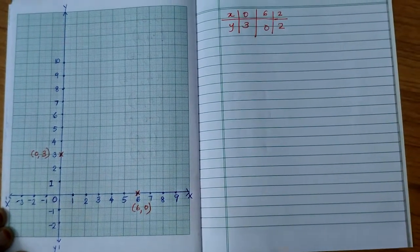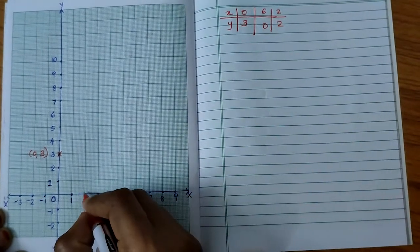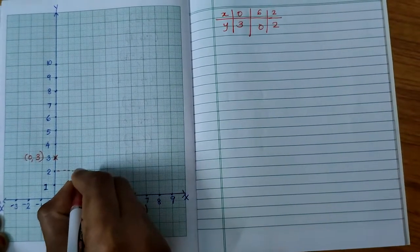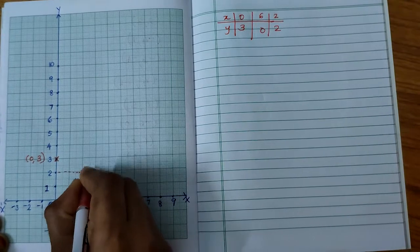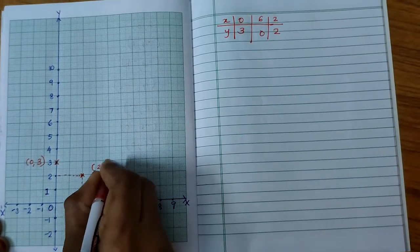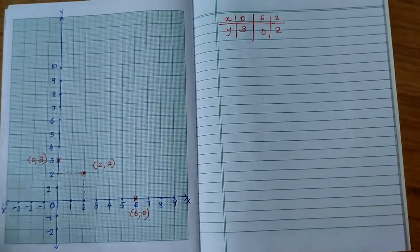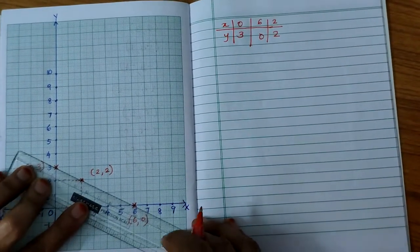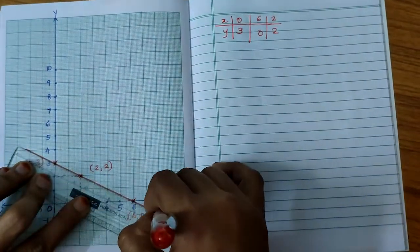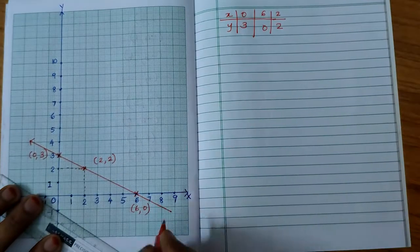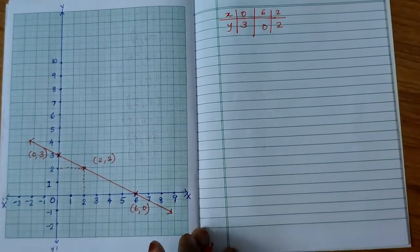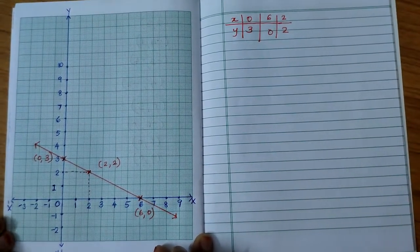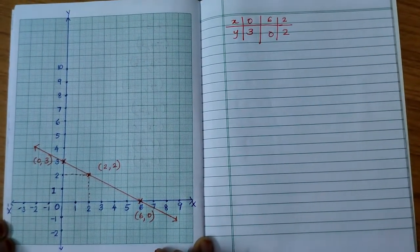Next solution is (2, 2). From x axis 2 and y axis also 2. Meeting point is (2, 2). We have to draw the graph. That means join these three points by using a ruler. From this we can understand this is a straight line. And for drawing a straight line actually two points only required. So two solutions only we need to find out.